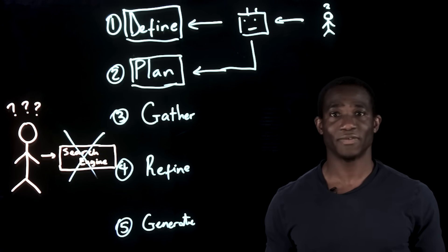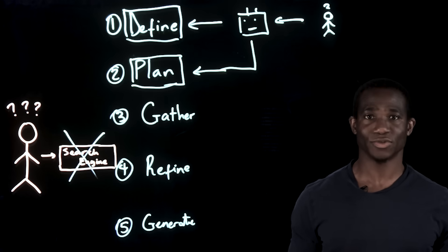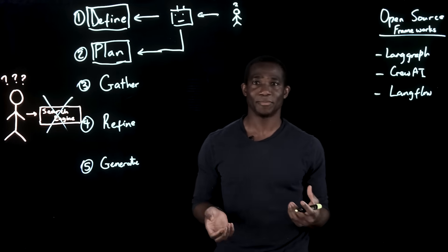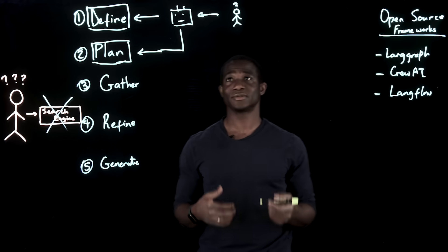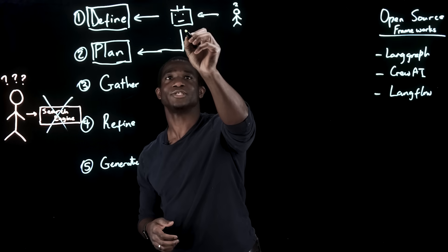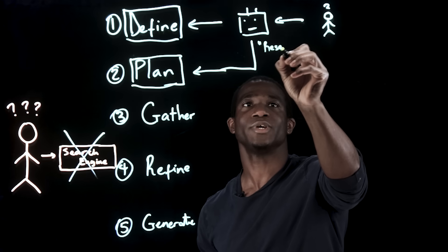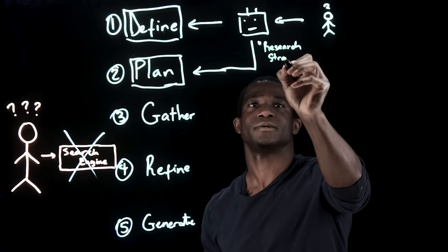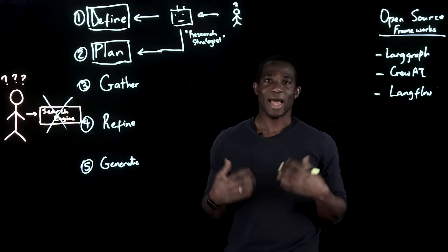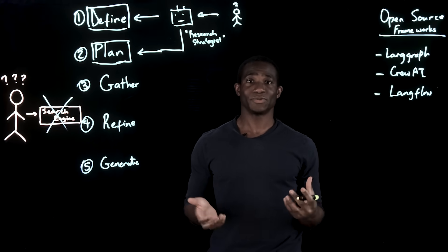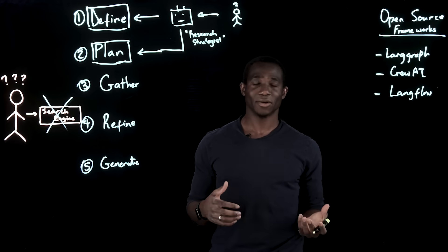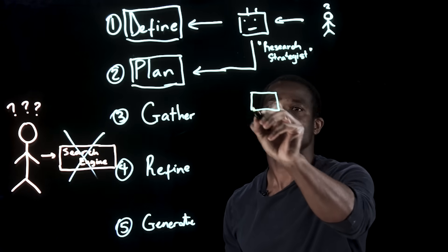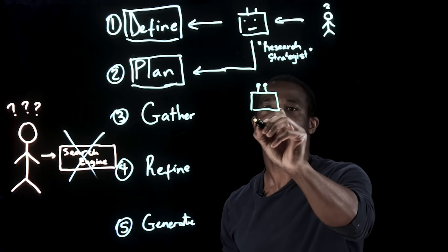Crew AI, for example, allows us to define specialized agent roles, and each of these agents could have an appropriate LLM to use for that role. So here, we might have an agent specialized as a research strategist. And this research strategist could be used for definition and planning, or we may have another agent defined, and his role could be data miner.